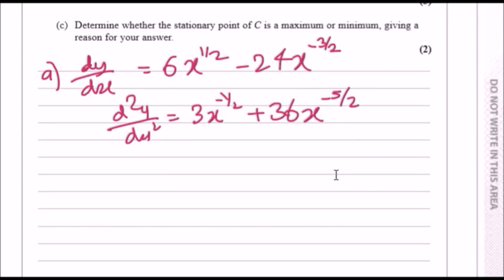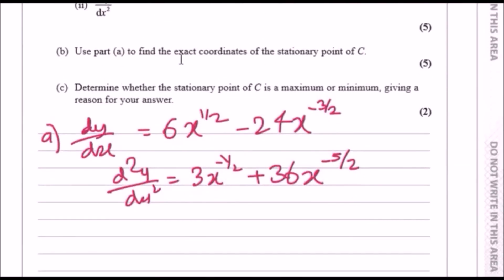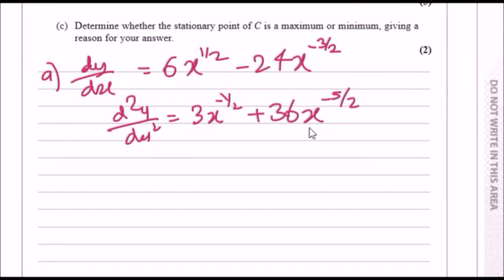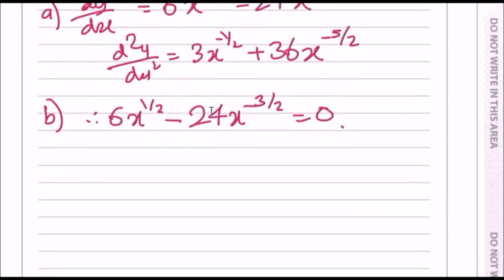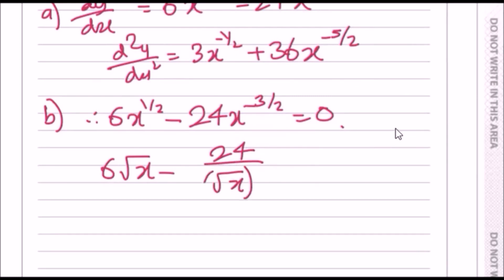For part b, find the exact coordinates of the stationary point. At a stationary point dy over dx equals 0, so set 6x to the power half minus 24x to the power minus 3 over 2 equal to 0. Converting back to root form gives 6 root x minus 24 over (root x) cubed equals 0.